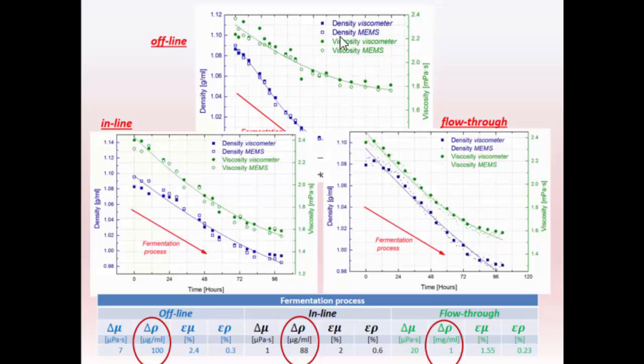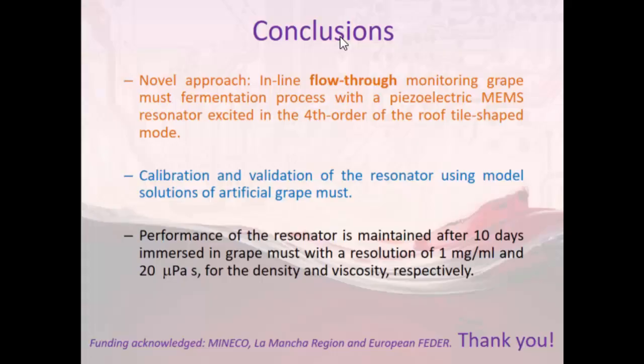So at the end we have the resolution in density which is the variable that is more important for the enologist and for the implementation which is best for the offline measurement of course, but it decreases to one milligram per milliliter in the case of the flow-through configuration which is comparable to any lab instrument. So in conclusion we have flow-through monitoring of the grape must. We are using these piezoelectric MEMS excited in the high-order out-of-plane mode. The performance of the resonator has been demonstrated for the full span of the fermentation process showing a good resolution of one milligram per milliliter in the process.